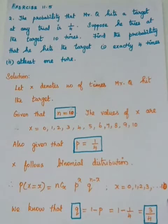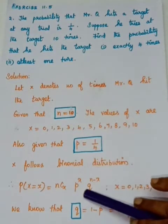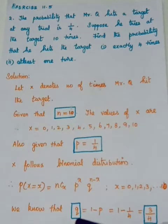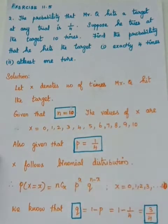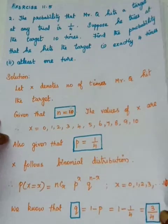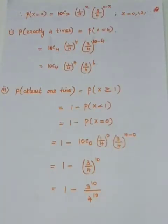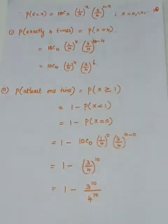Since N is equal to 10, X takes values from 0 to 10. We have P, and we need Q. Q is equal to 1 minus P, so 1 minus 1 by 4 equals 3 by 4. Now substituting N, P, and Q into the formula: P(X) = 10CX · (1/4)^X · (3/4)^(10−X), where X varies from 0 to 10.